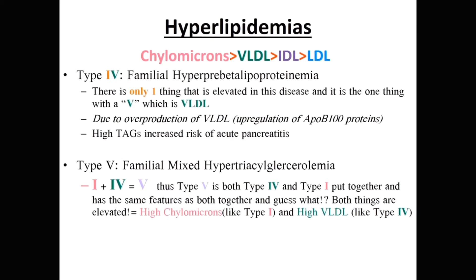Type 4 is familial hyperpre-beta lipoproteinemia. Mnemonic: the Roman numeral IV contains a 'V,' pointing to VLDL. And with a 'I' in front of it, only one thing is high — just VLDL. This is due to overproduction of VLDL, driven by upregulation of ApoB100 protein causing premature VLDL secretion. High VLDL means high triglycerides, so expect acute pancreatitis.